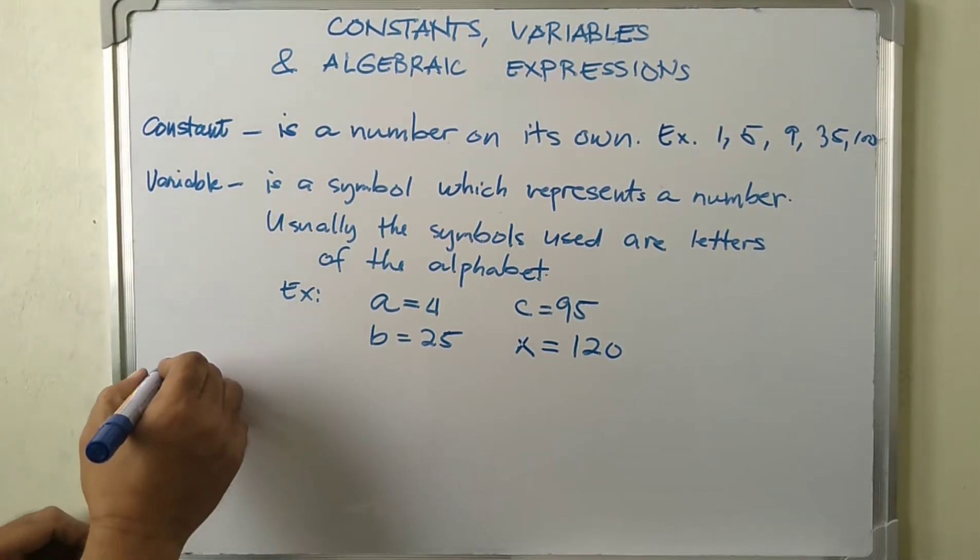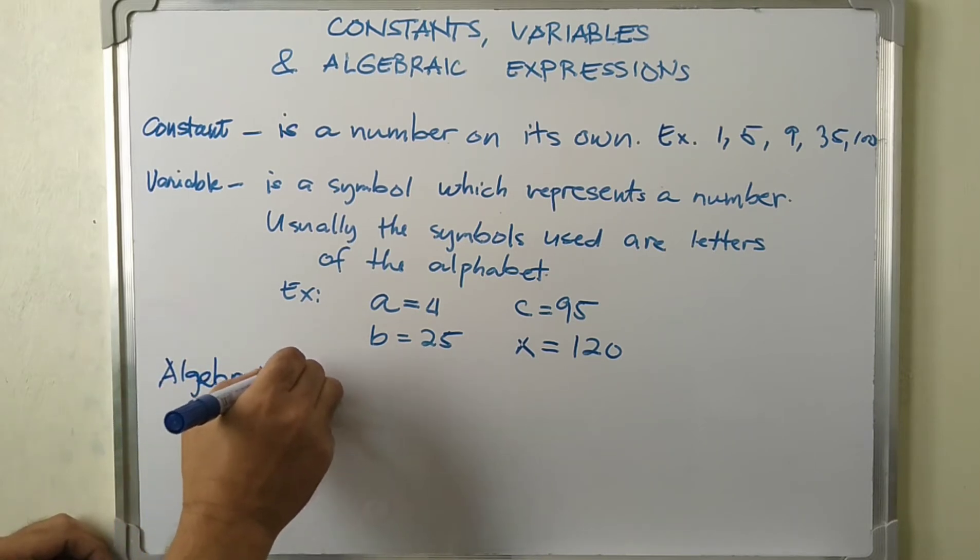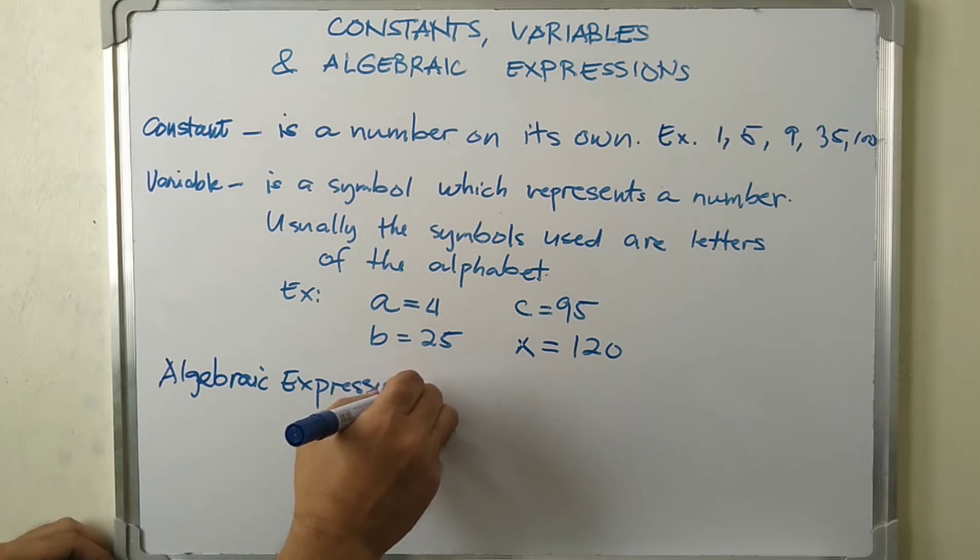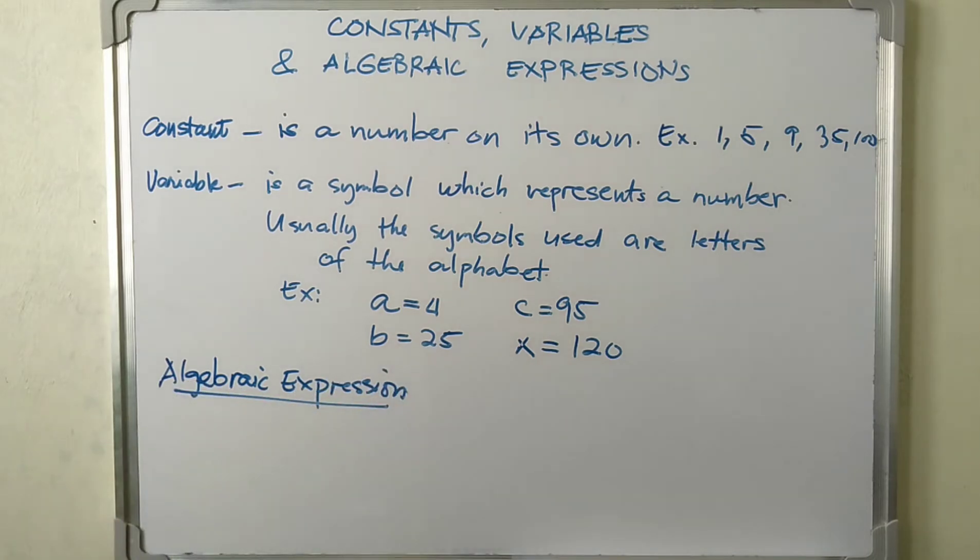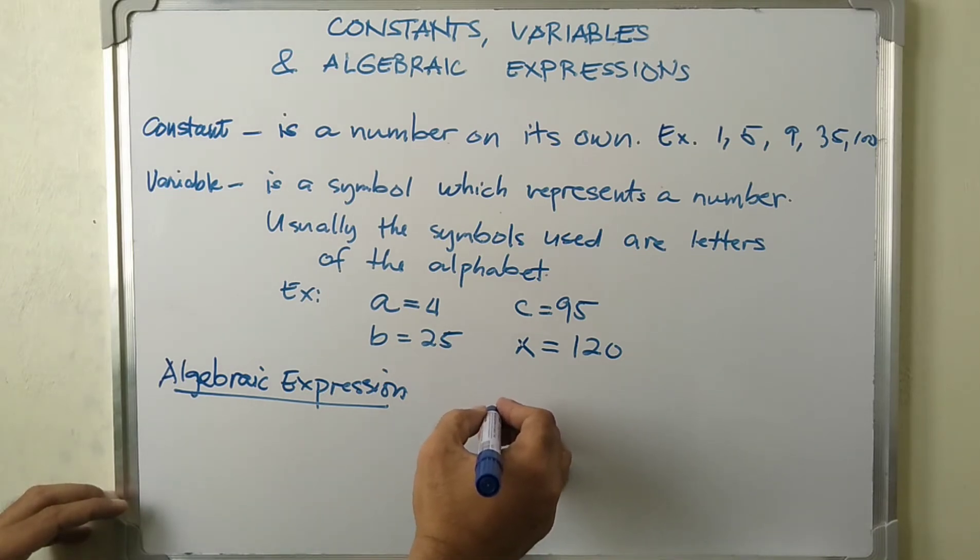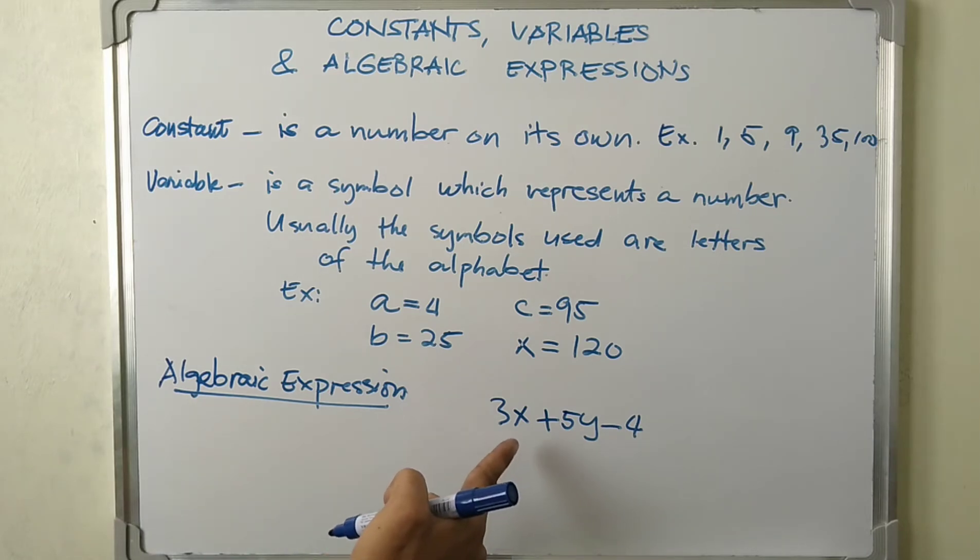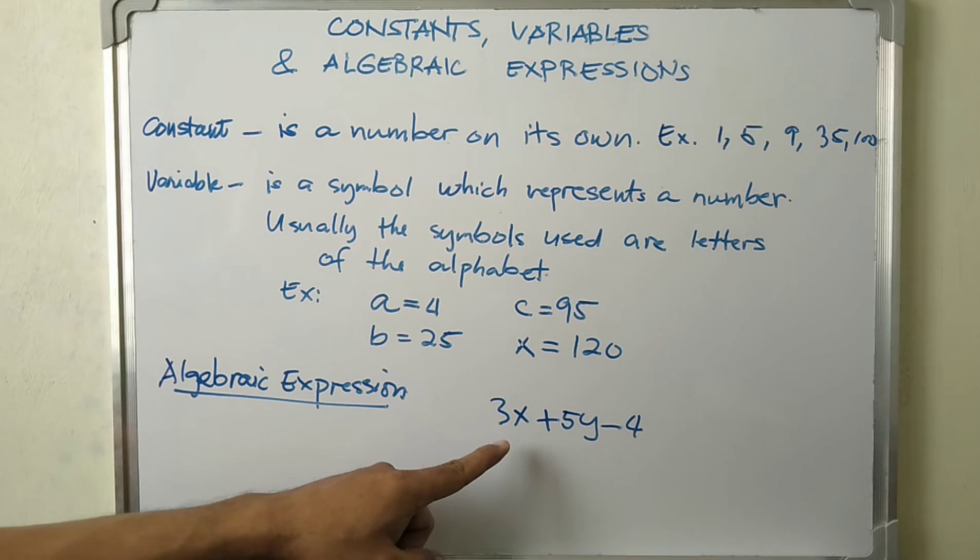Next, we have algebraic expression. Let's have an example first. An algebraic expression 3x plus 5y minus 4. So this is an expression. You notice here that it is a combination of constant and variable.